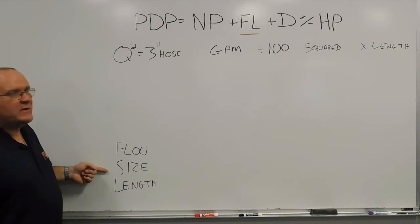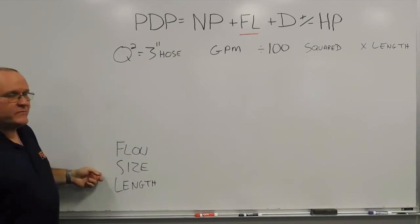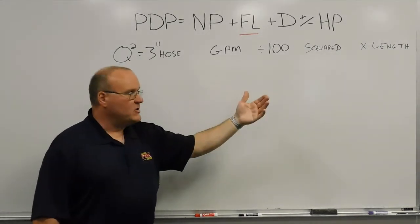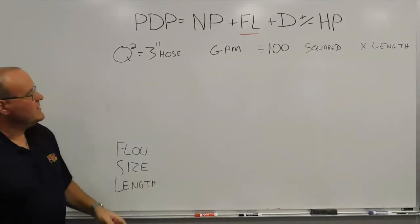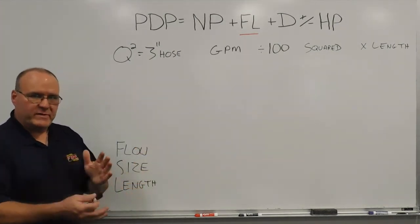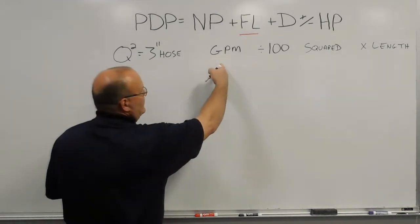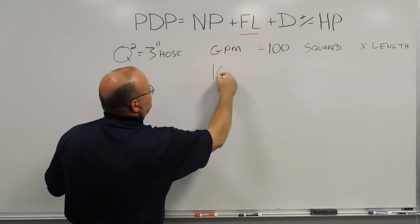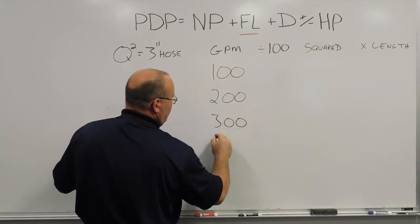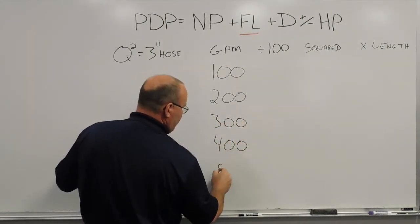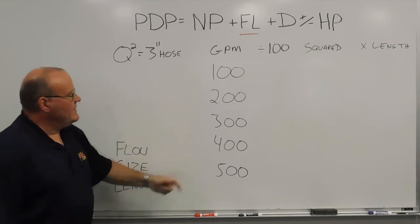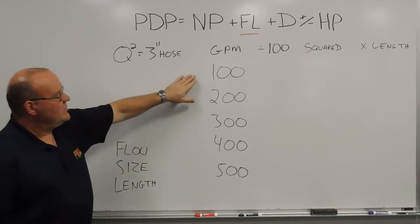Right now the size we're dealing with — Q-squared — is always going to be 3-inch hose. To account for length, once we've done our calculations, however many feet of hose there is, we make a calculation to determine total length. We're going to stay within the realm of 500 gallons a minute for easy math. So under gallons per minute, we start with 100, 200, 300, 400, and 500 gallons per minute. Then we take that number and divide it by 100.